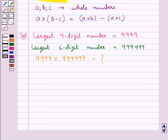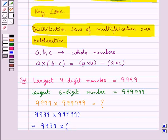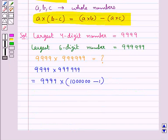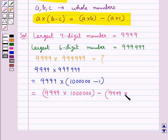For this, we use the distributive law of multiplication over subtraction. We rewrite 9,99,999 as (10,00,000 minus 1), so the expression becomes 9999 multiplied by 10,00,000 minus 9999 multiplied by 1.